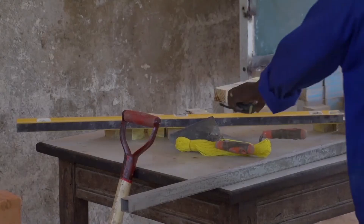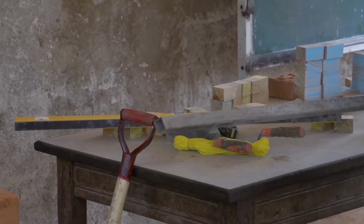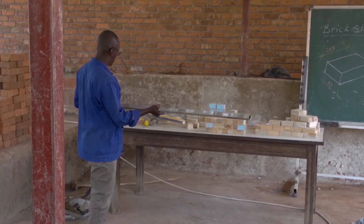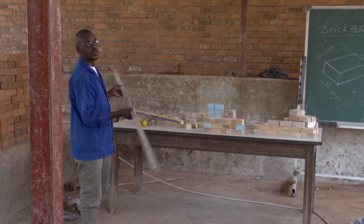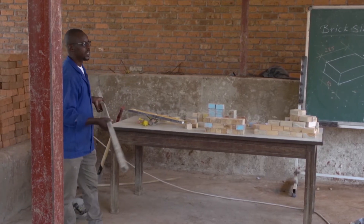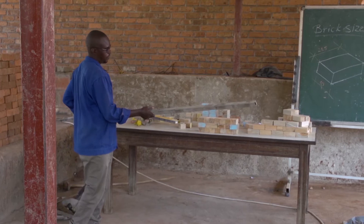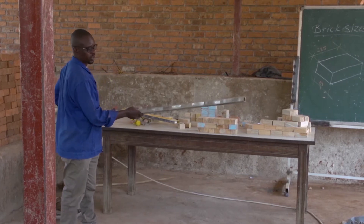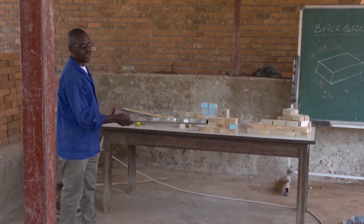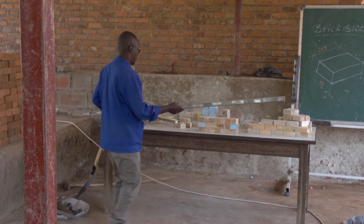We also have this straight edge, which is used to align or to check if our masonry work is straight — that is, for alignment.